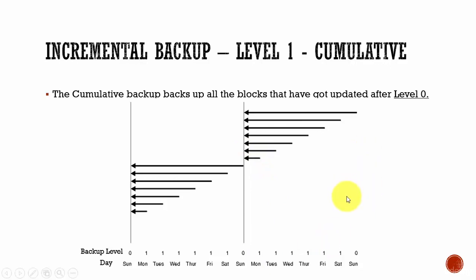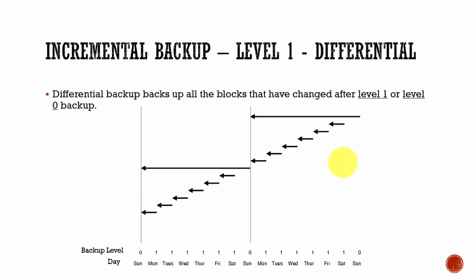How do you remember that? In a cumulative backup, it will backup all the changes that have been changed since the last level 0 backup. Whereas in a differential backup, it will first check if a level 1 backup is present — if it is, it will take till that point; if not, then it will take till level 0.